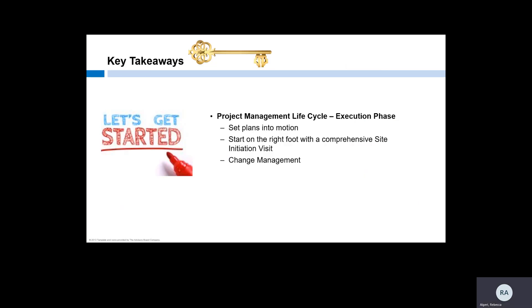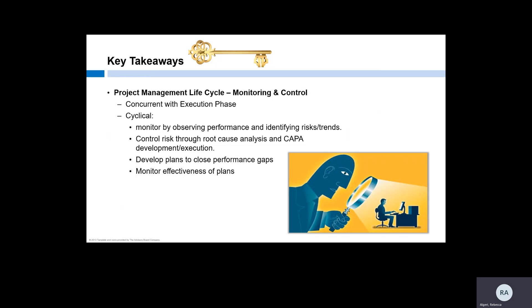Let's review our key takeaways for this module. During the execution phase, the team will set their plans into motion. Make sure everyone starts on the right foot by holding a comprehensive site initiation visit that ensures everyone is trained on the study, understands their role, and you have all of the materials necessary to start enrolling subjects. Change is inevitable, and a project manager needs to be prepared to lead the team through changes to the study. The monitoring and control phase runs concurrently with execution. This phase is cyclical — we observe performance and identify risks and trends to monitor study conduct. Using that information, we control risks to the project by conducting root cause analysis and developing or implementing a corrective and preventative action plan. We identify performance gaps and work with the team to develop plans to close them. Then we monitor the effectiveness of our plans and make necessary adjustments.